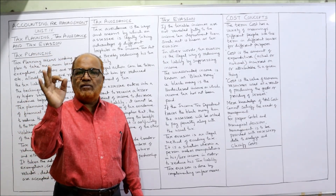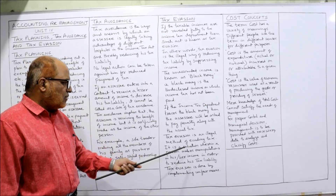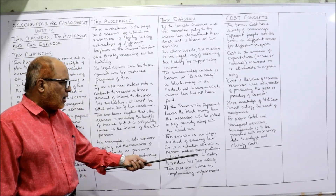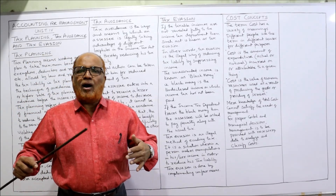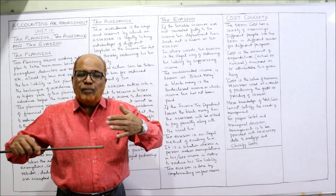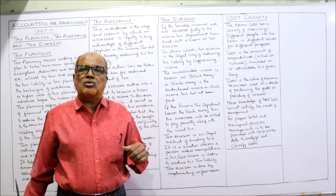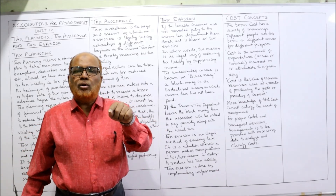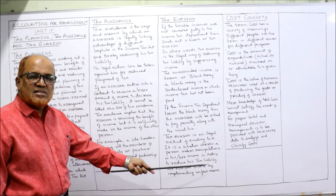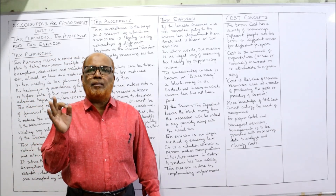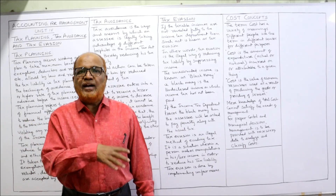Tax evasion is an illegal act. If a person makes manipulations in their accounts in order to reduce tax liability — not showing a clear picture, making window-dressing accounts — that is called tax evasion. Lastly, tax evasion is done by implementing unfair means; it is not fair or ethical to evade the tax. As an honest citizen, we must pay tax according to the act.